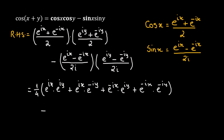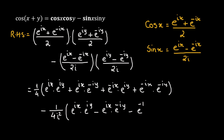Similarly, multiplying the second bracket gives us 1 over 4i squared, multiplied by: e raised to the power of ix times e raised to the power of iy, minus e raised to the power of ix times e raised to the power of negative iy, minus e raised to the power of negative ix times e raised to the power of iy, plus e raised to the power of negative ix times e raised to the power of negative iy.